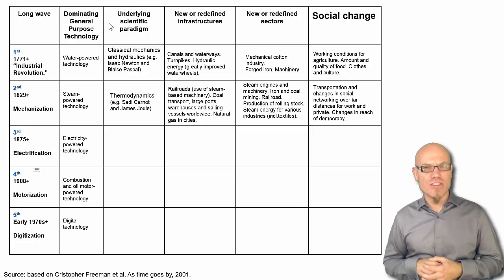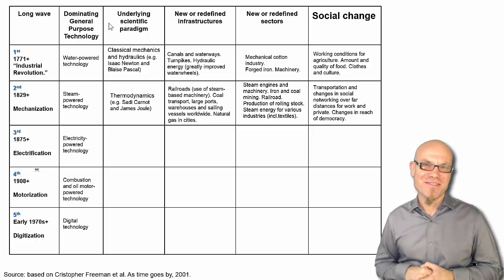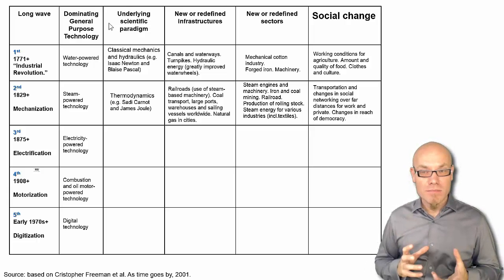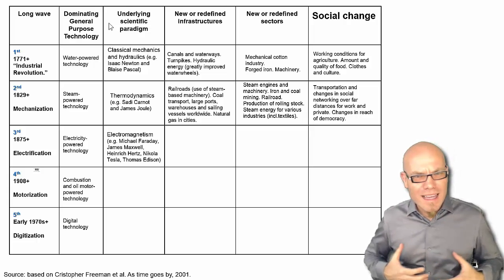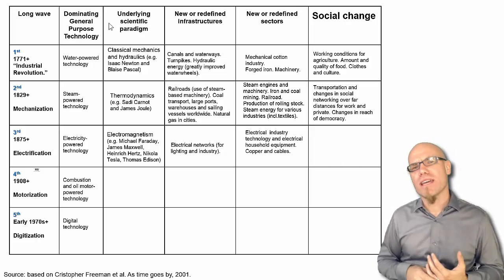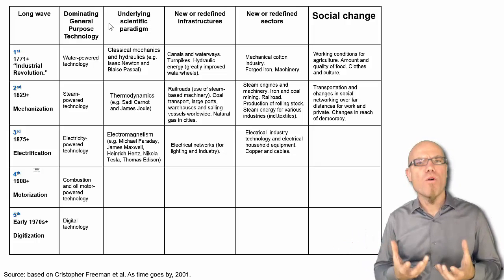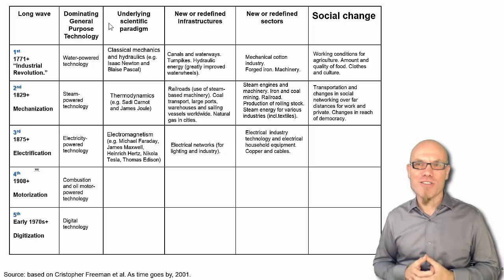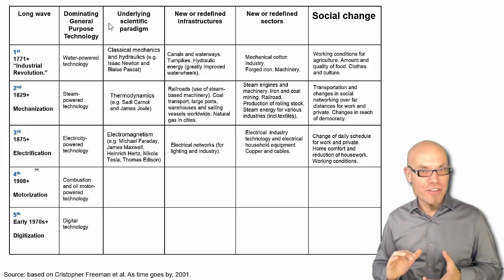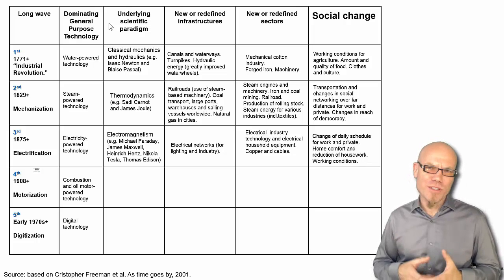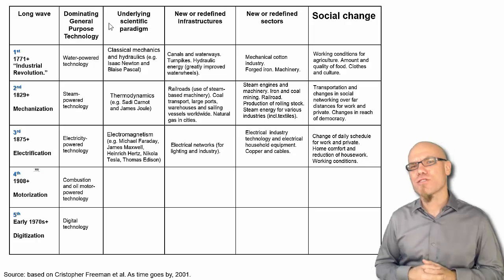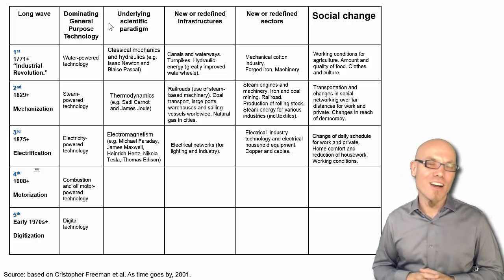For the electrification paradigm, the underlying scientific paradigm is electromagnetism. The new refined infrastructure was the electric grid, which had to be created from scratch, along with the electronics industry and copper cables—without copper cables, electricity couldn't be distributed. The social change had far-reaching effects: not only did it transform industries, but for the first time we were able to work after sunset, making us independent from sunrise and sunset. This had profound implications for society, workflow, social life, and our psychological outlook on life.